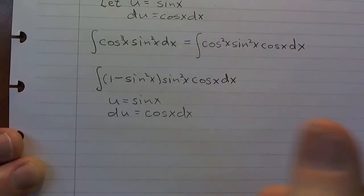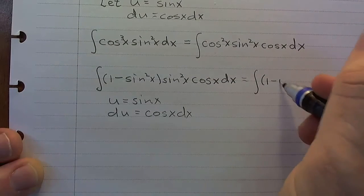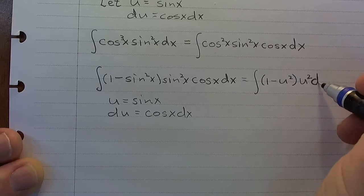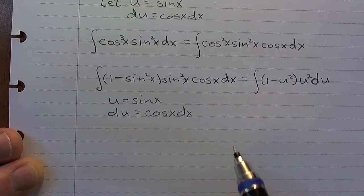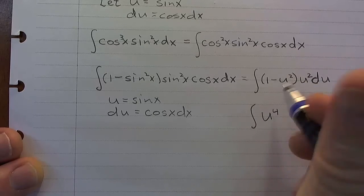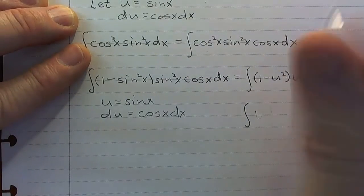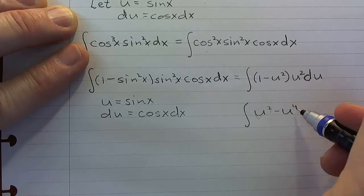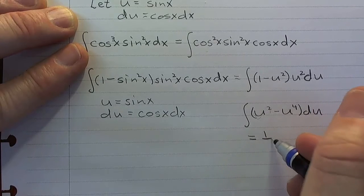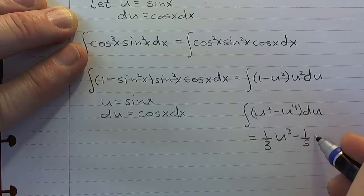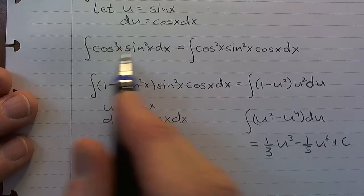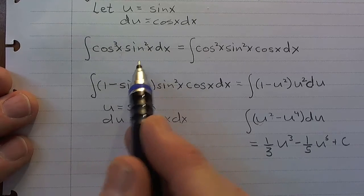Using the Pythagorean identity, I write cosine squared as one minus sine squared. So I have one minus sine squared times sine squared times cosine x dx. Now I can let u equal sine x, and then du is cosine x dx — that's what I wanted. So the integral becomes one minus u squared times u squared du, which is u squared minus u to the fourth du. That's easy: one-third u cubed minus one-fifth u to the fifth plus c.